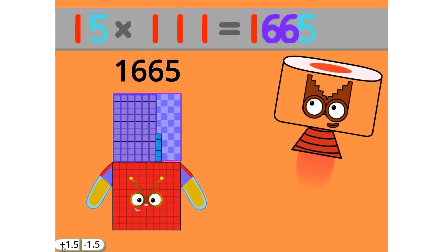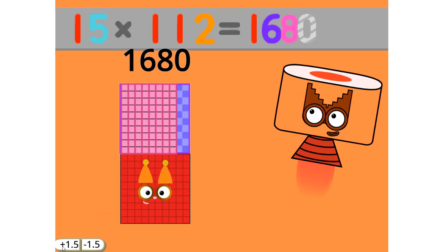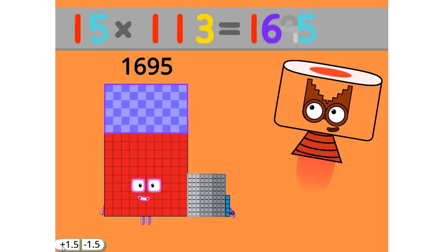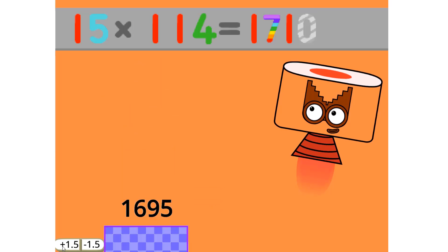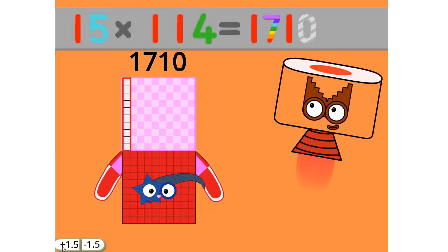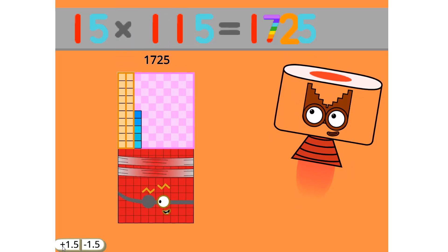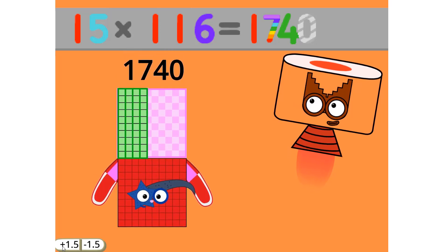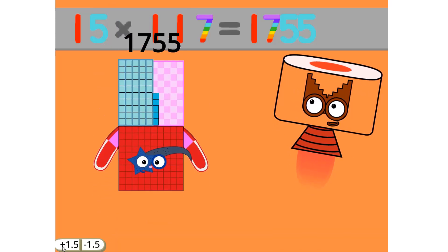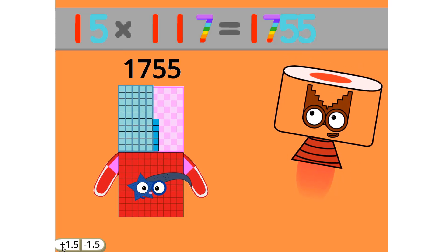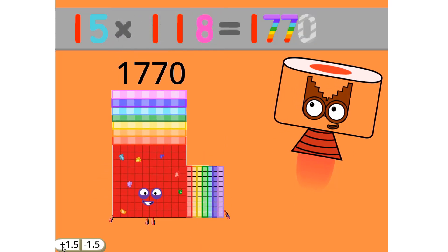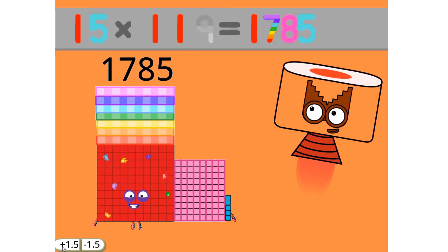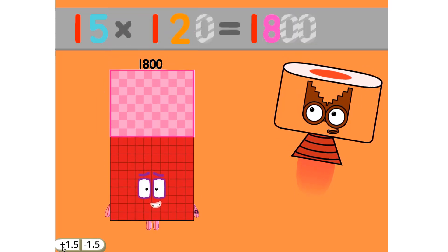15 times 110 equals 1650. 15 times 111 equals 1665. 15 times 112 equals 1680. 15 times 113 equals 1695. 15 times 114 equals 1710. 15 times 115 equals 1725. 15 times 120 equals 1800.